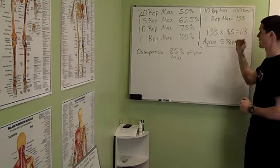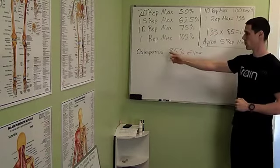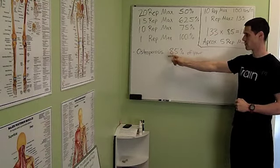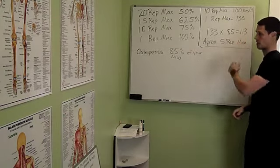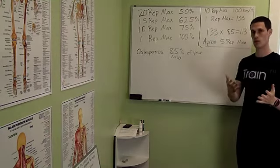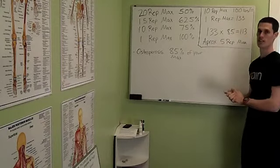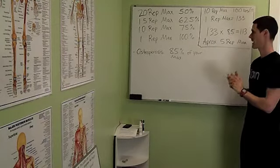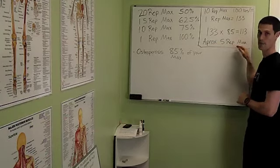So from there, we know the 1 rep max is 133. Then we multiply 133 by 0.85, which gives us 113 pounds. That's 85%. So if this was you, we would say 85% is 113 pounds, and that's approximately your 5 rep max.